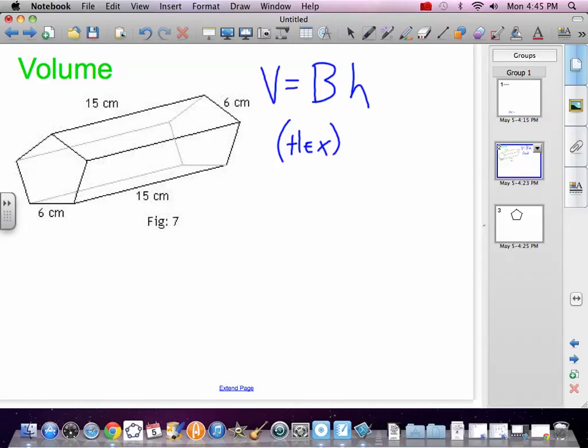times the height. The height is the height of the shape, which is otherwise known as the distance between the bases, perpendicular distance between the bases. That's our 15. We got to find the area of a hexagon, pentagon. Why am I saying hexagon? I don't know, penta.